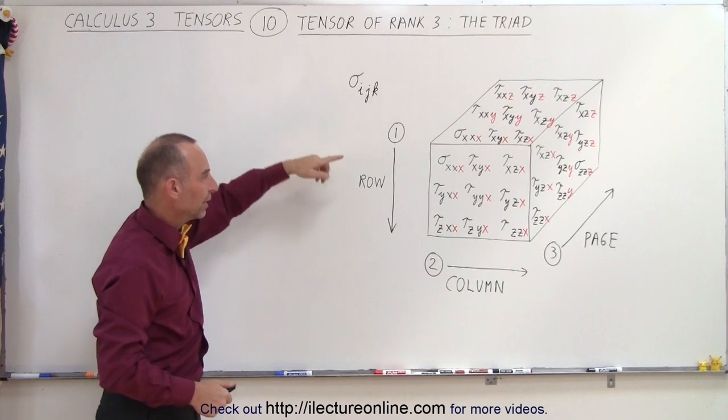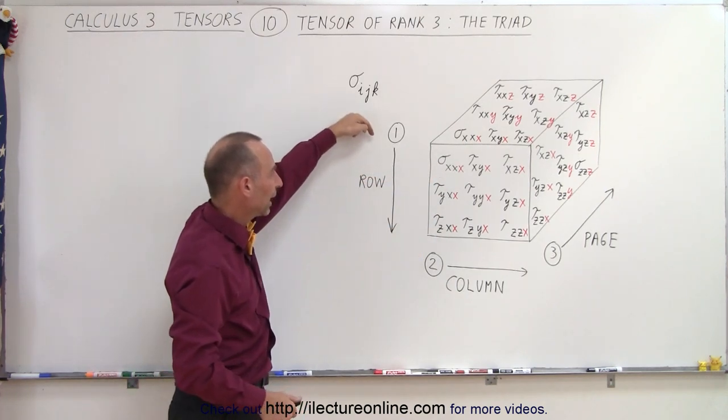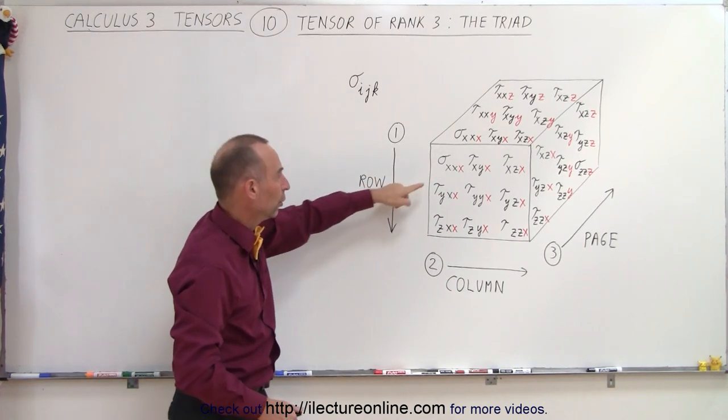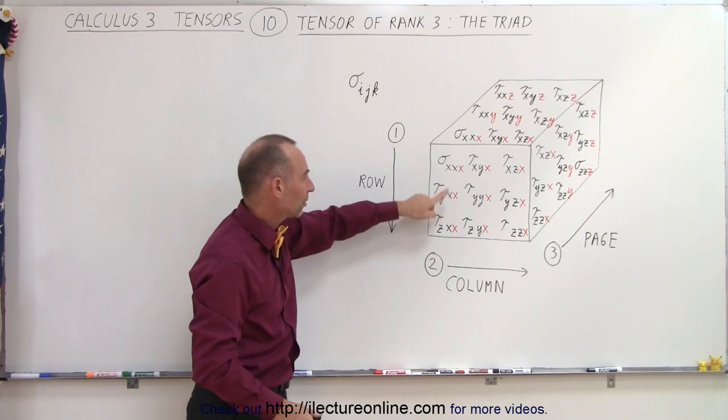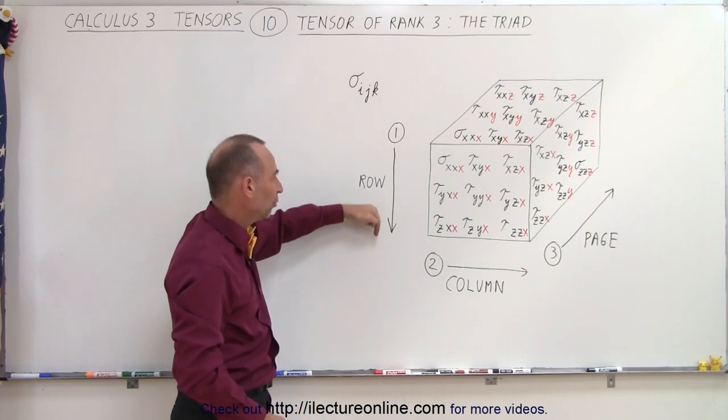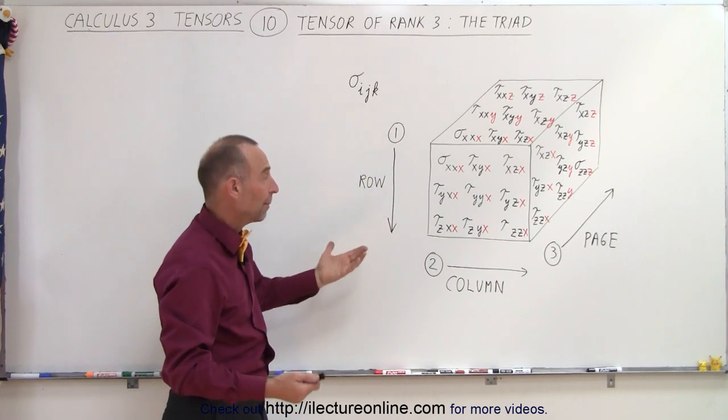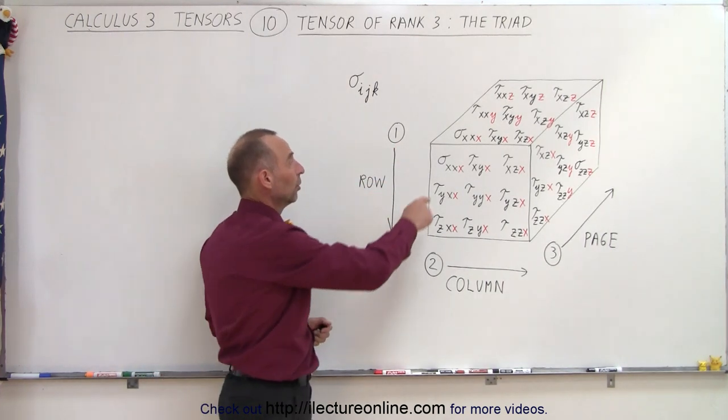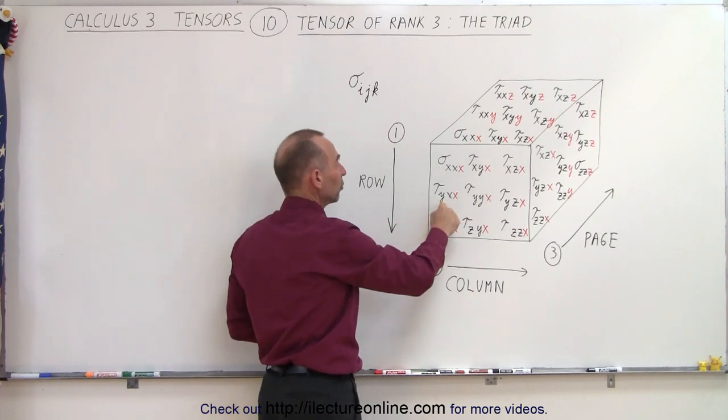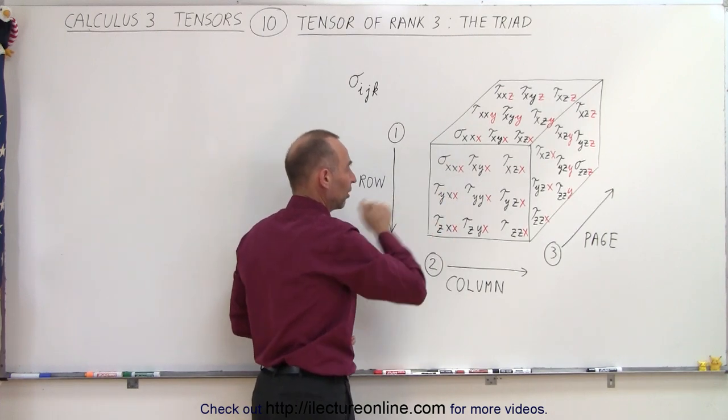So the first count is the first subscript, and we call that the representation of the row. So this represents row X, row Y, row Z, and it increases as we go down. We can also say row 1, row 2, row 3, and so that might be a better way to write it. So that would be sigma 1, sigma 2, sigma 3 in the first subscript.